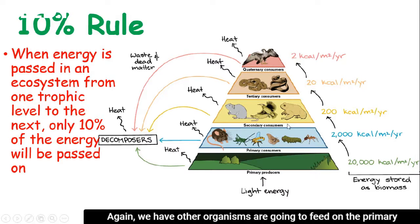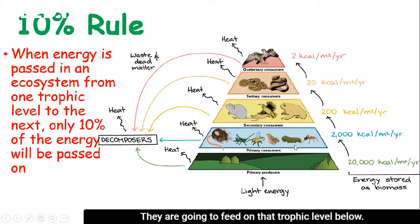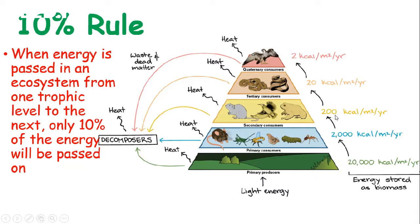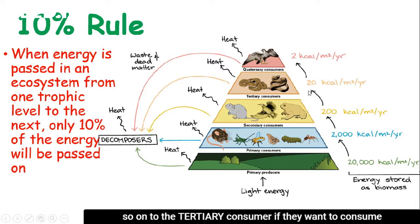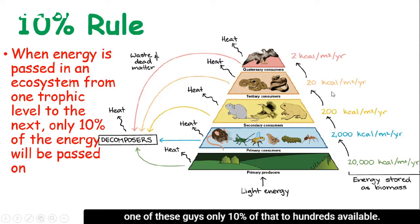We have secondary consumers that are going to feed on the primary consumers. Again, only 10% of that 2,000 is going to be available for them to use, so they only have about 200 kilocalories per meter squared per year available at that level. And then so on to the quaternary consumer — if they want to consume one of these, only 10% of that 200 is available, so 20 kilocalories per year.